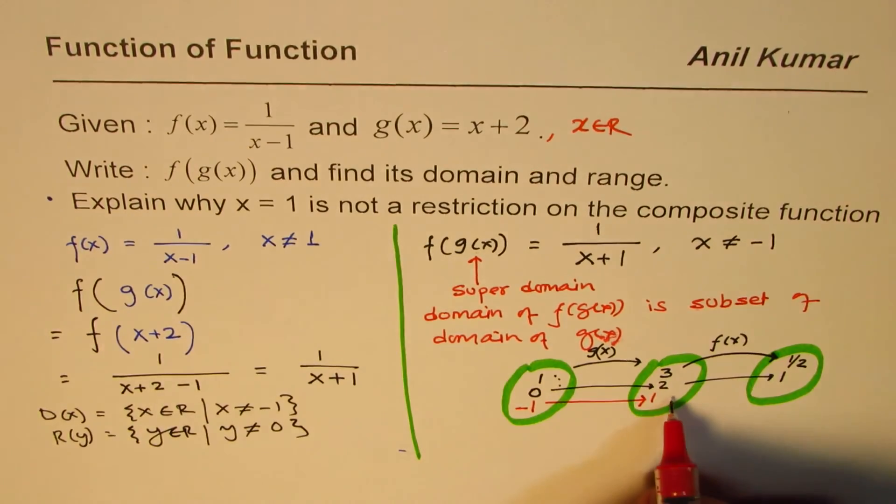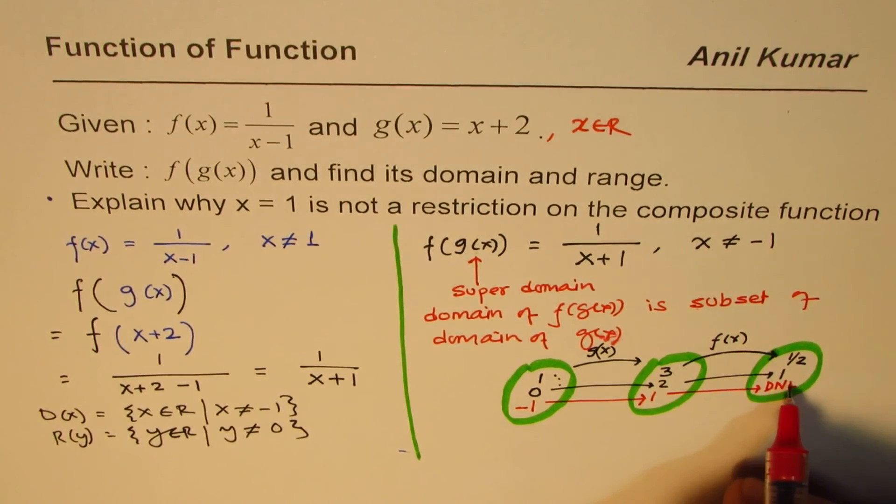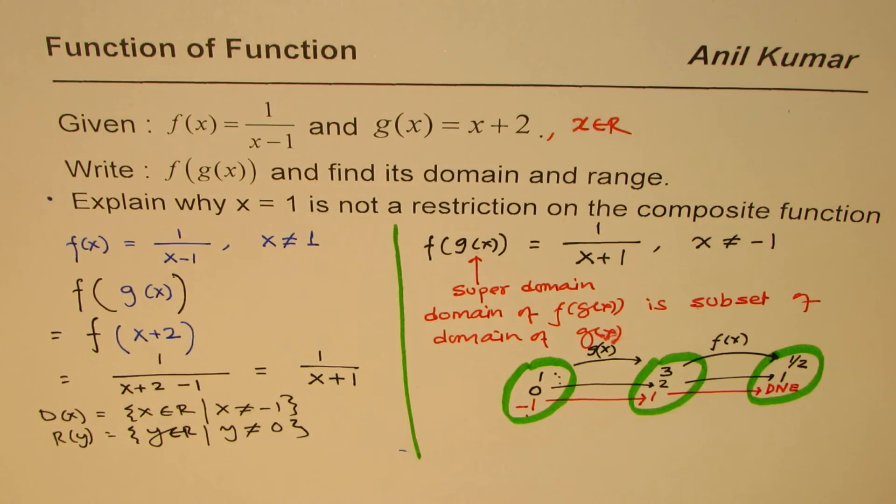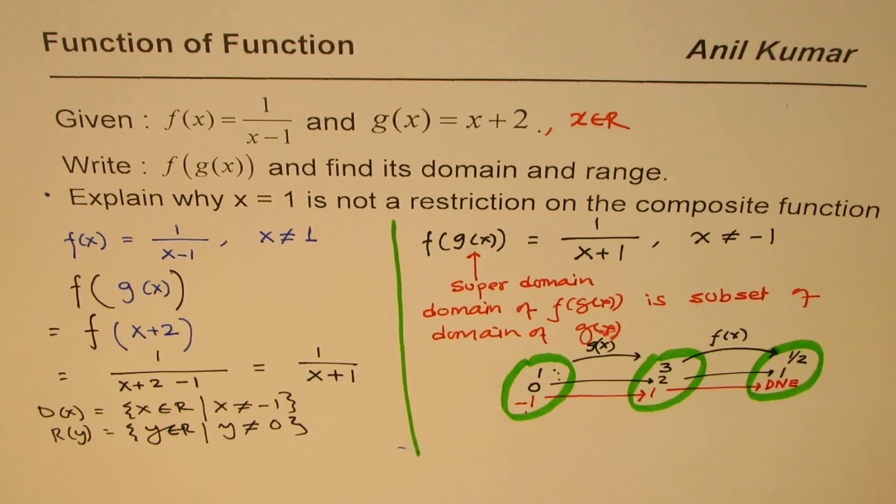But if I substitute this 1 here, I get 1-1 in the denominator. It does not exist. Therefore -1 is the restriction. Do you get the idea? -1 is a restriction and that is how we can visualize it.